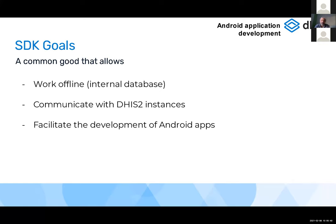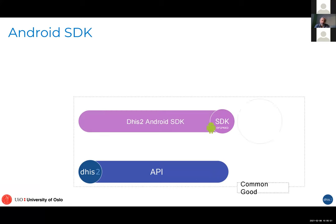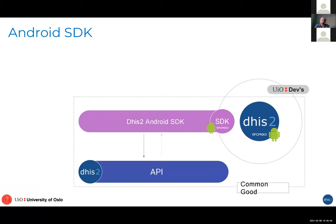DHIS2 is not only a web application but a platform with a public API. The Android SDK is being implemented by the DHIS2 Android official application, and communication happens all the time between the Android SDK and the API. The Android application never contacts the server directly — it always goes through the SDK.